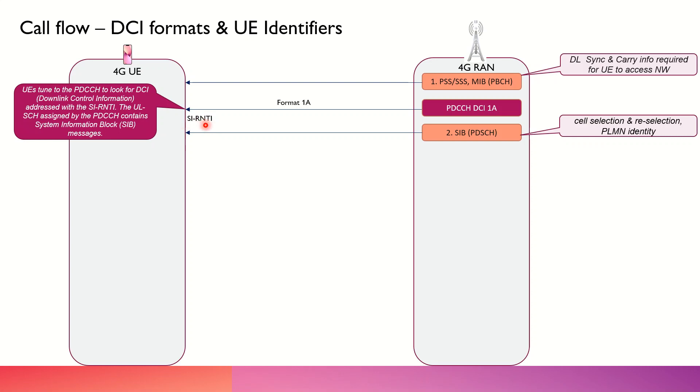The UE would have tuned to the PDCCH to look for the particular DCI accordingly. In this case, it is a SIB message which is coming in the downlink.